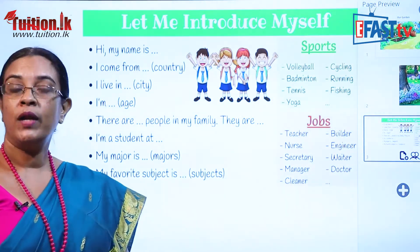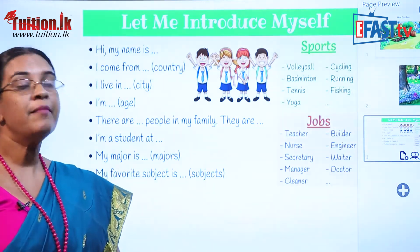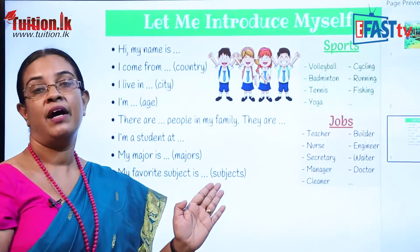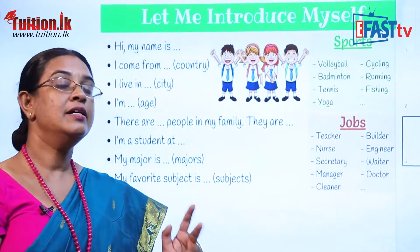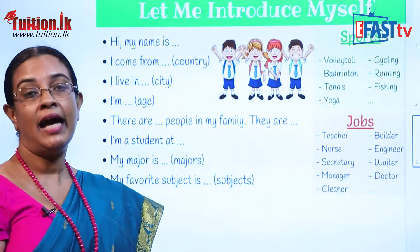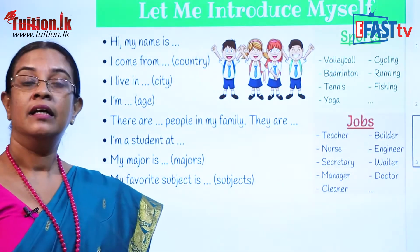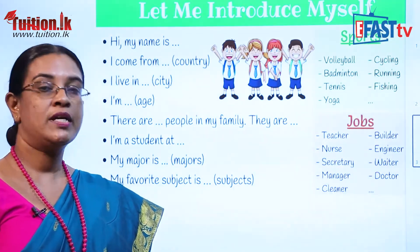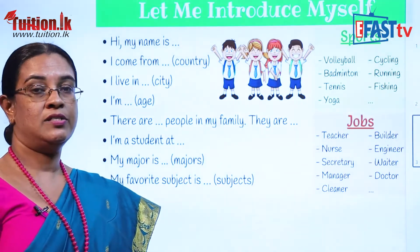There are five members in my family. Then you can say: they are my mother, my father, my sister, my brother and me. Then you can say about your school: I am a student at... You have to say the name of your school. You can say: I am a student at Valuwana College or Karnangara College, like that.